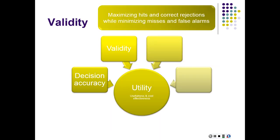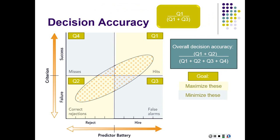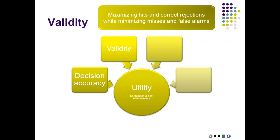So that's decision accuracy. Validity, which we've been talking about in earlier segments, is when you maximize the hits and the correct rejections while minimizing the misses and the false alarms. In this picture, when I mentioned that the goal was to minimize these and maximize those, we're talking about validity. When we have a good valid instrument, we're going to have a battery that really boosts decision accuracy, really improves our chances of hits and correct rejections and minimizes our risk of misses and false alarms.